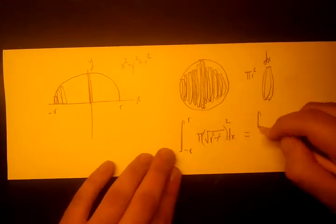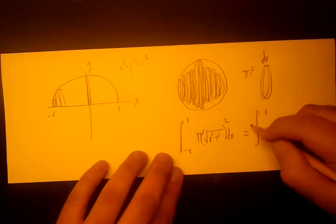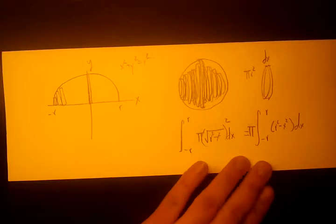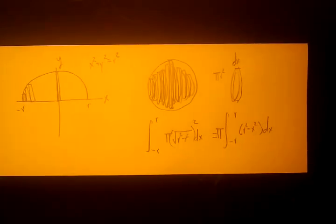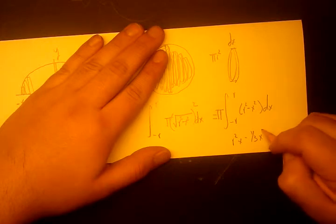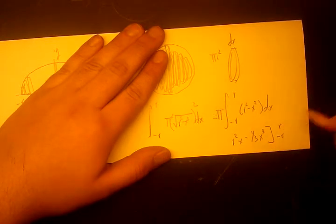And we can simplify this a little bit. We're going to pull the pi out, and we're going to get r squared minus x squared dx. Now, we can just go ahead and integrate this. No use substitutions required. And we get r squared x minus 1 third x cubed, taken from negative r to r.